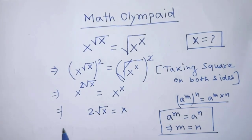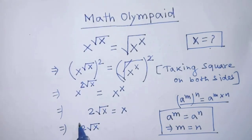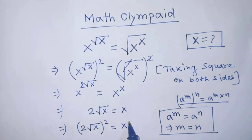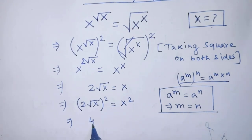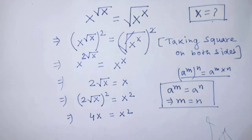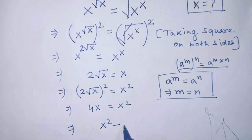After that, again we have to take square on both sides of this equation. Then it will be 2 times square root of x, whole to the power 2, is equal to x to the power 2. After that, it will be 4 times x is equal to x squared, so x squared minus 4x is equal to 0.